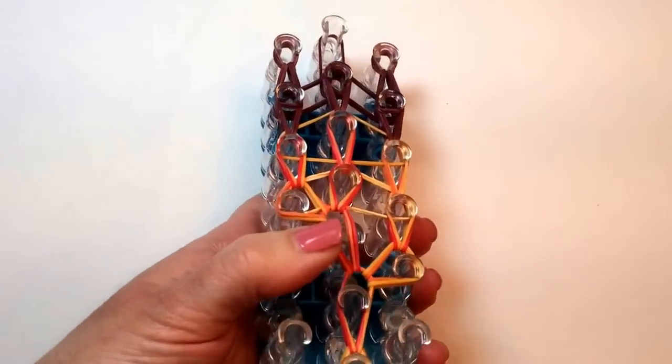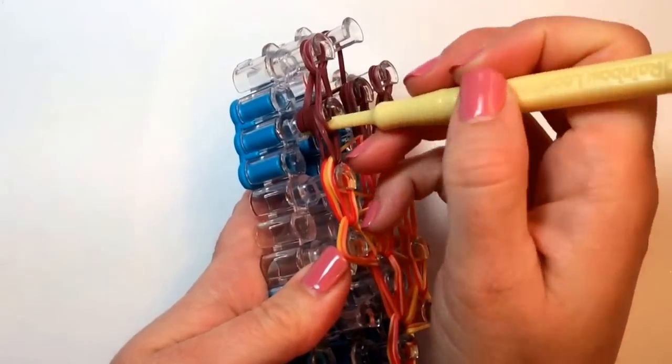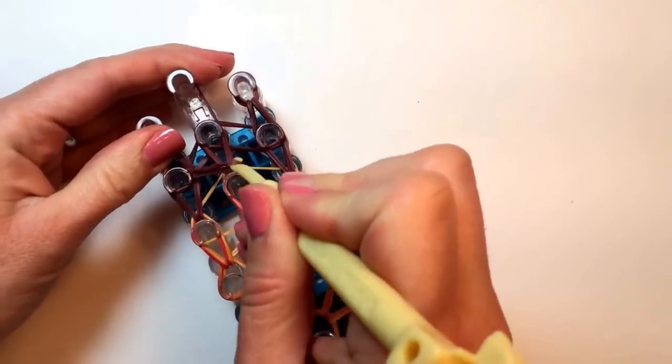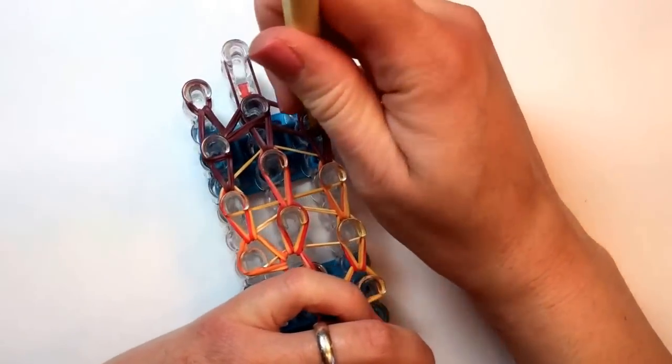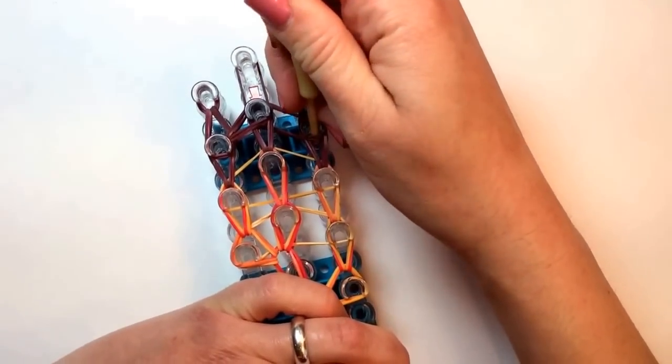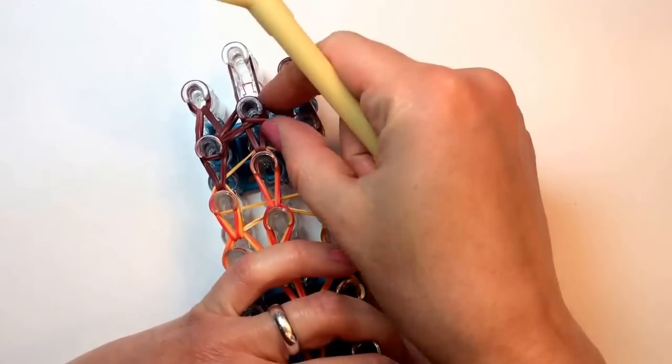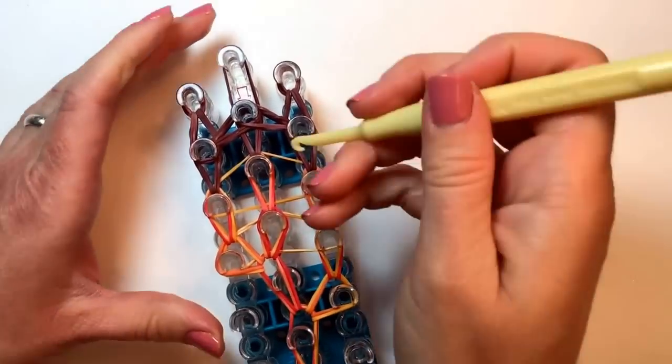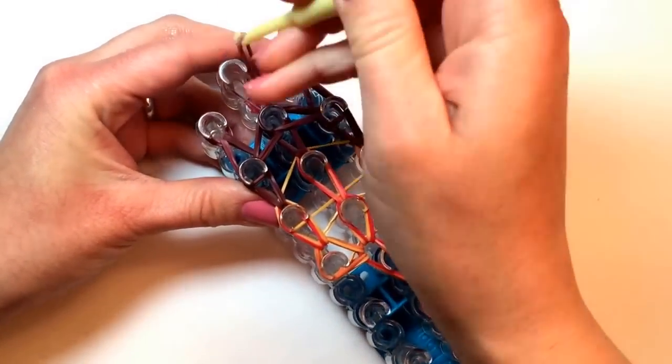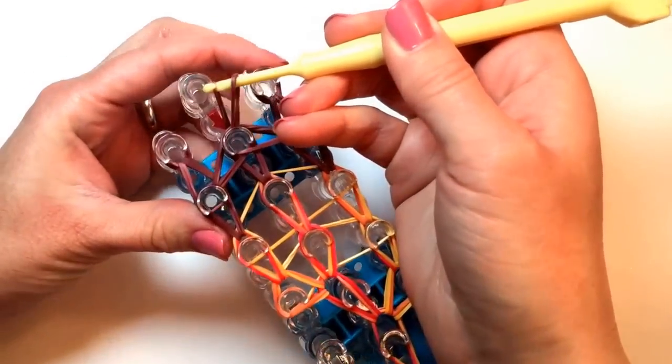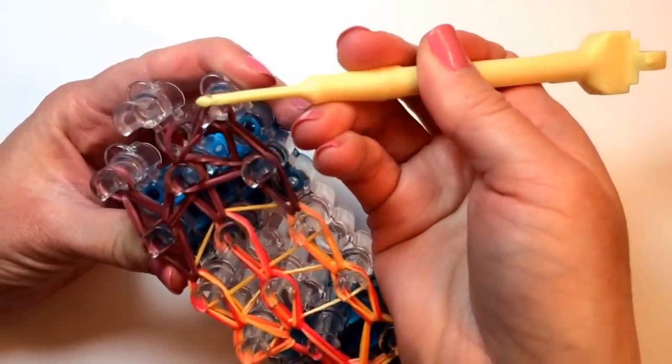And now you can come in here. Catch those bottom two bands. Bring them up and to the center. And repeat on this side. Catch your bottom one. And we're going to create a slip knot by taking the bottom band through the center of the top band. And pulling tight.